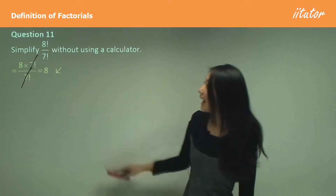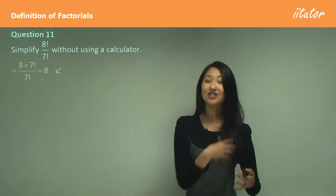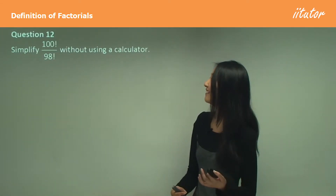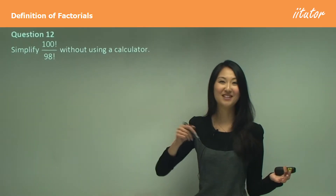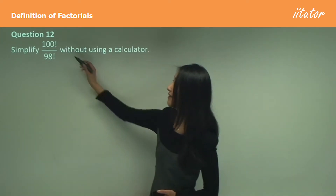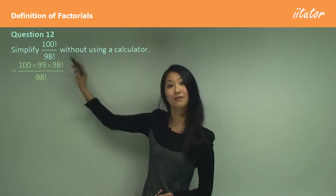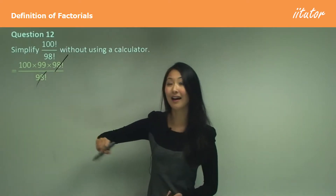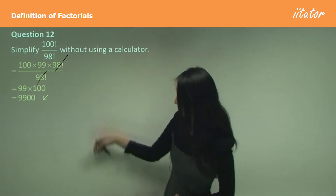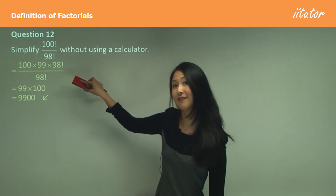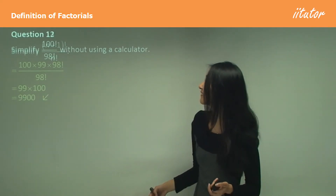This step of rewriting a factorial comes up often in proofs and induction later on. For question 12: simplify 100 factorial over 98 factorial. Writing it all out would take too long, so instead rewrite 100 factorial as 100 × 99 × 98 factorial. Then cancel the 98 factorials, leaving 100 × 99, which equals 9,900.